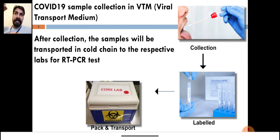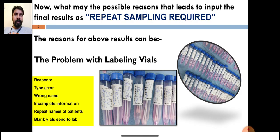From here, the reasons of repeat sampling required arise. Moving on to the next slide, what are the reasons that lead to the final result as repeat sampling required? The very first reason is the problem with labeling the vials, the VTM vials.